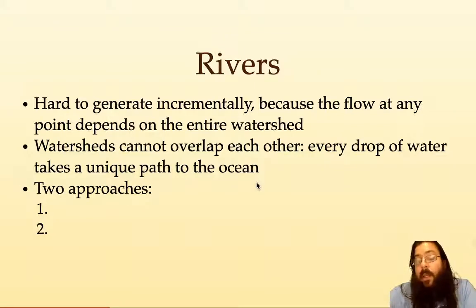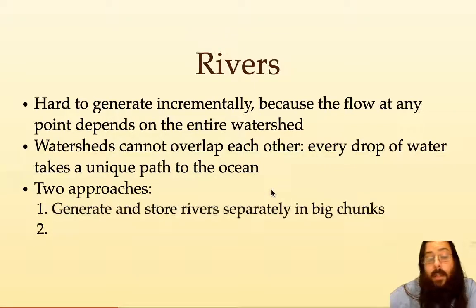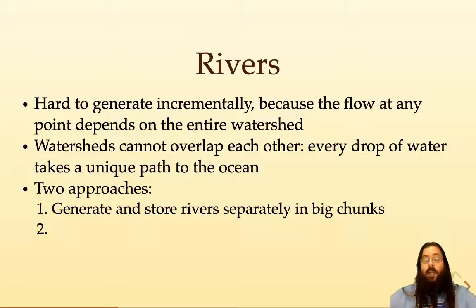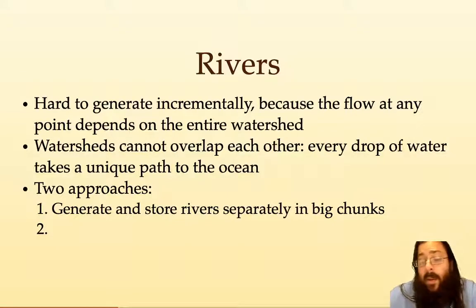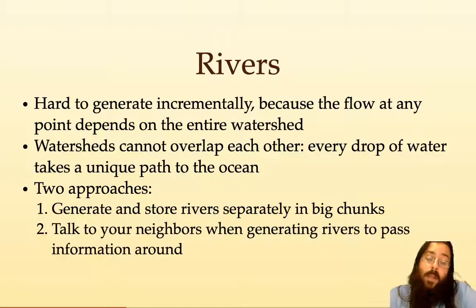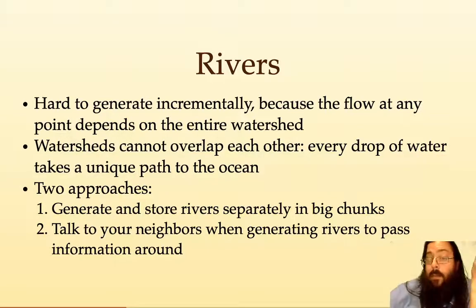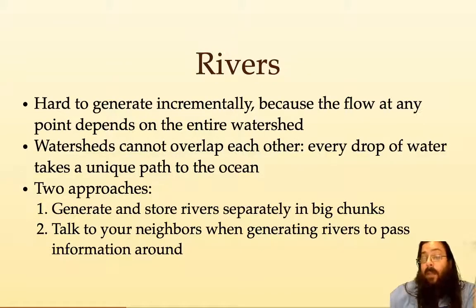We also have constraints like watersheds cannot overlap each other. So there are two approaches you might take. One is to make some big chunks — maybe a whole continent — generate all the rivers on that continent and store them, using a generation process that respects all the constraints. There might be seams to those chunks, but maybe those seams are in the ocean and we don't care about them. Another approach is to have small chunks that generate incrementally but talk to their neighbors to figure out the information they need. That might have a problem: if you have to talk to your neighbor and they have to talk to their neighbor, we're not really doing incremental generation anymore — we're asking the entire watershed to generate.